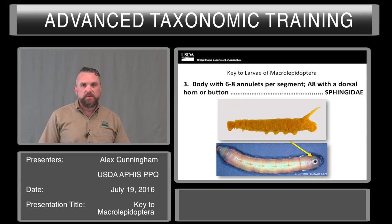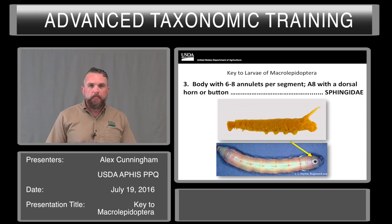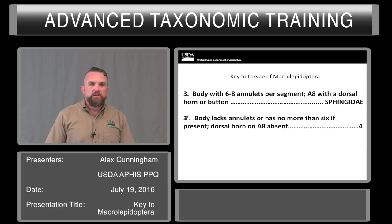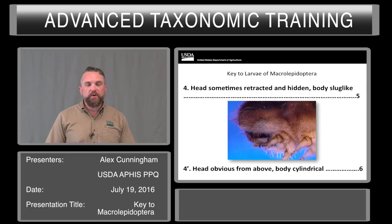Another easy group to rule out are the sphingids. Body with six to eight annulets per segment, and A8 often has a dorsal horn or button — which is why these are often called hornworms. They don't always have the horn; in some specimens you'll see only where a horn would have been. You'll see six to eight annulets per segment in the sphingids. The alternative is the body lacks annulets, or has no more than six if present, and a dorsal horn is not present on A8.